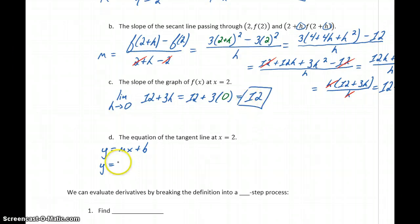We know that its slope is 12, because that's what we just came up with above. So we get y equals 12x + b.